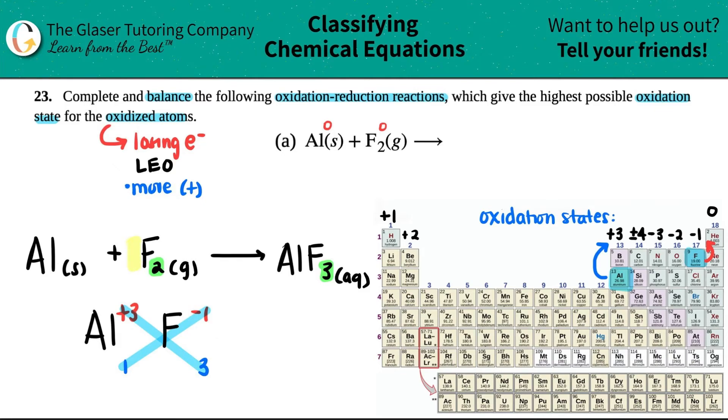But what I can do is I can put coefficients in front of them. What's the common number between two and three? I can both get them up to a six if I multiply each by the other number. Two times three is six, and three times two is six. So if I put a three, this would tell me that I have six fluorines. And if I put a two here, this tells me that I have six fluorines. And that's balanced.